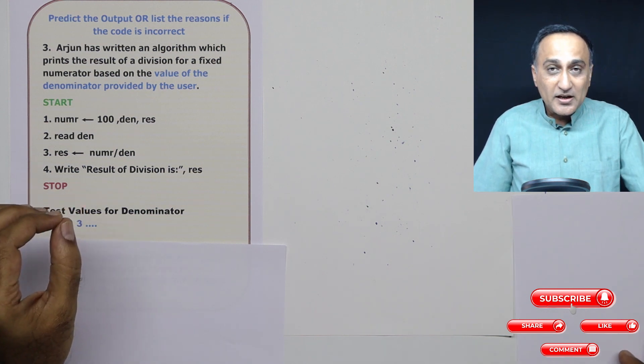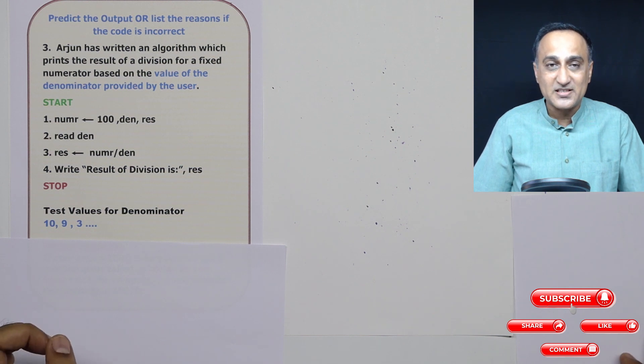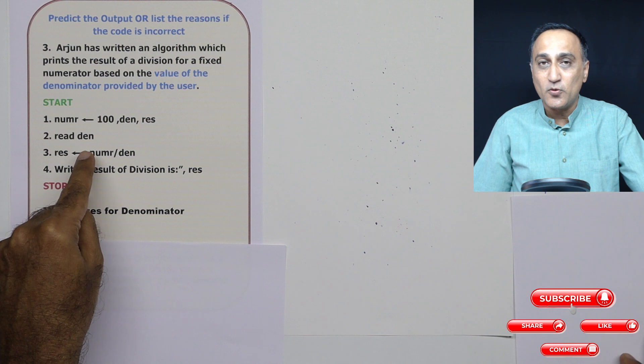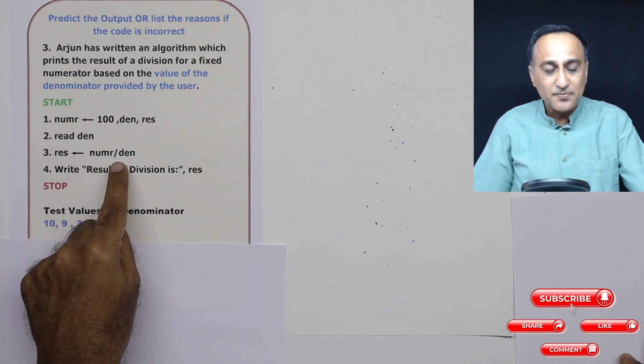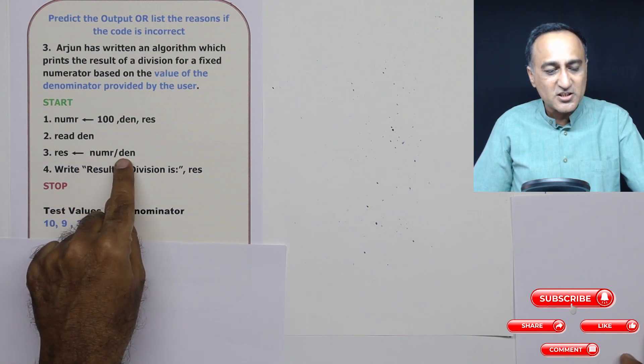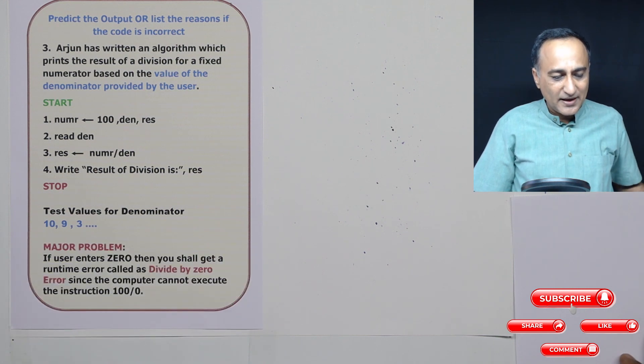This code will work correctly in most cases, but it will fail in a very important case. Suppose the user enters the denominator as zero, this step cannot be solved by a computer. That's why I told you in an algorithm, you need to give instructions which are clear.